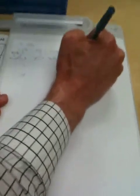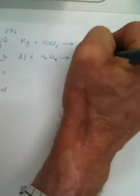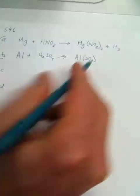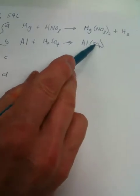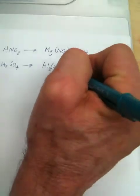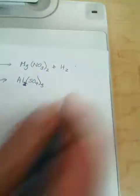So aluminum is going to go with the sulfate — the negative part. Now, sulfate has a two minus ion, and aluminum has a three plus. So I use the charge on sulfate as the subscript on aluminum, and the charge from aluminum as the subscript on sulfate: aluminum subscript two, sulfate subscript three. What else are we going to get? It's a metal with an acid, so we're going to get hydrogen gas.